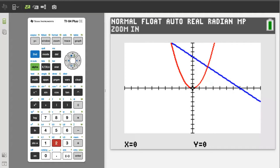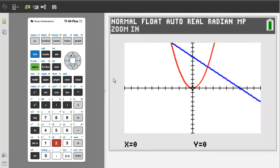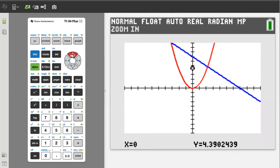Now we get this blinking cursor at the point 0,0. Use the arrow buttons to move the blinking cursor to the area you want to zoom in on. I will move it here. You can move it anywhere on the graph. Now to zoom in on that area, press the enter button.